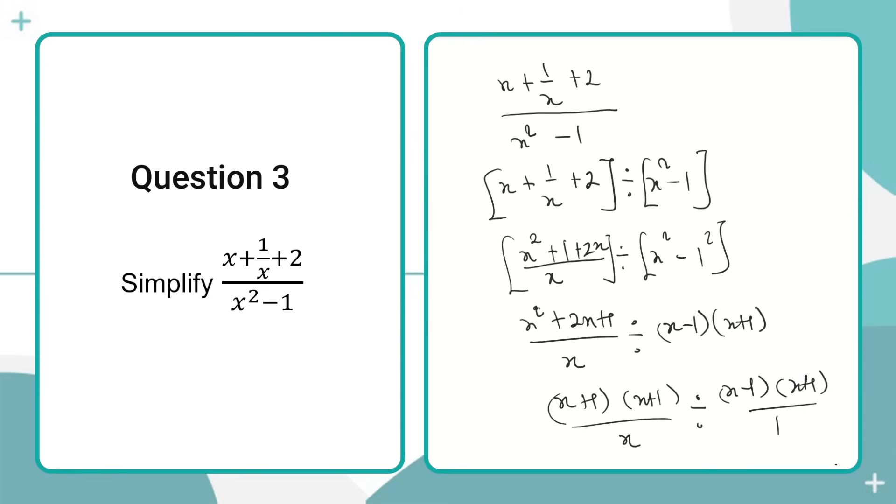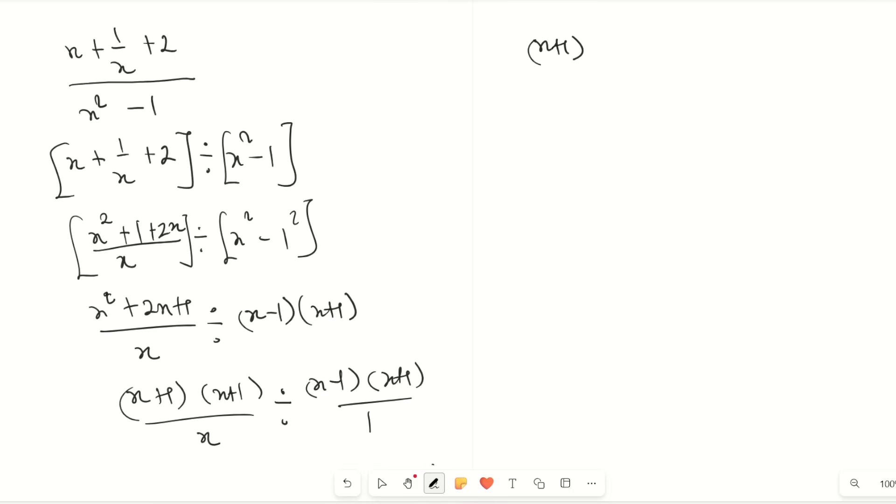We can rewrite this as [(x+1)(x+1)/x] × [1/((x-1)(x+1))]. We see that because of multiplication, this (x+1) can cancel with this (x+1). When we multiply, we will have (x+1) at the top, all over x(x-1).